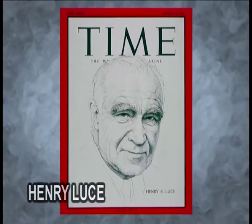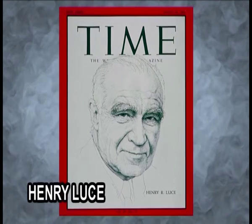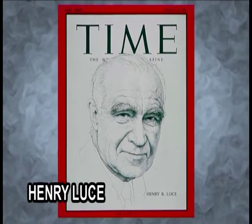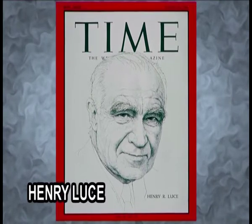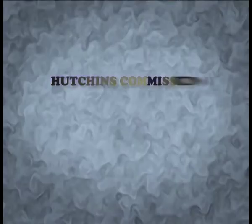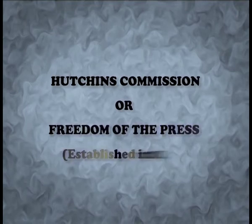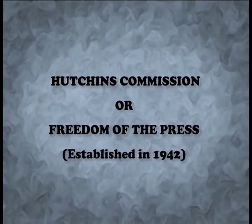In response, Henry Luce, the publisher of Time magazine, provided funding for an independent commission to make recommendations concerning the role of the press. The commission members included respected people from many areas of society, including academics, politicians, and heads of social groups. This commission was referred to as the Hutchins Commission or Freedom of the Press, and was established in 1942. The commission released its report finally in 1947.